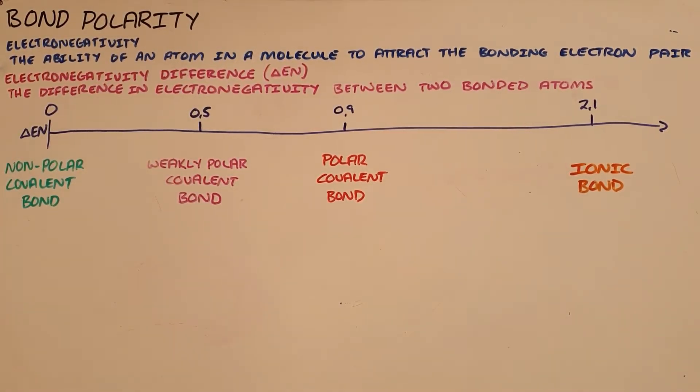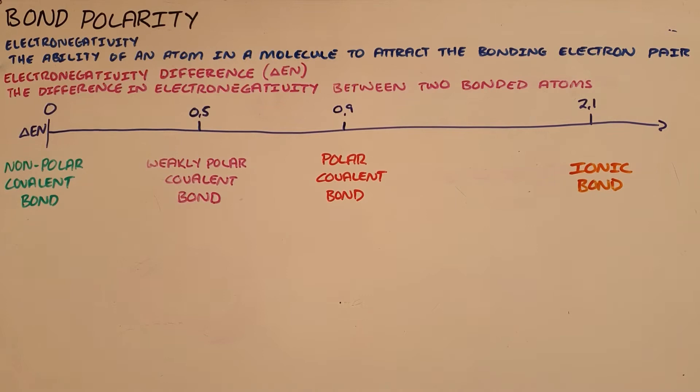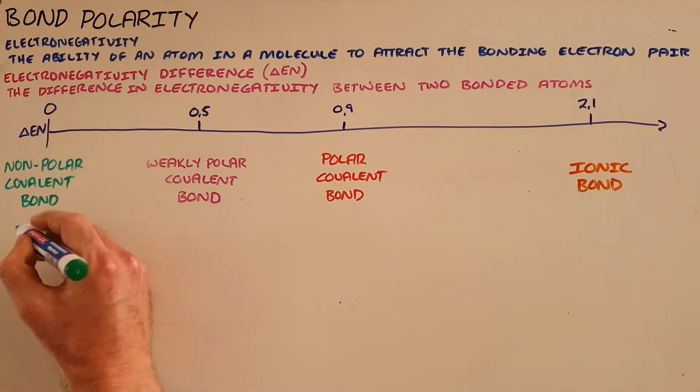Understanding bond polarity is very important as it plays a role in molecular polarity and as a result, a role in the intermolecular forces that exist between molecules. What is most important to understand about bond polarity is the electronegativity of an element, which is the ability of an atom in a molecule to attract the bonding electron pair.